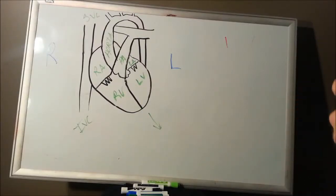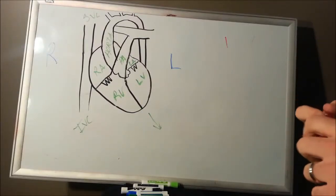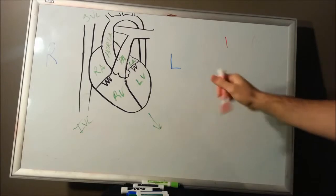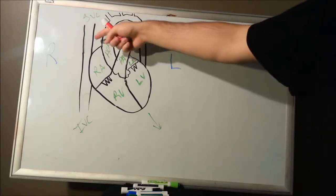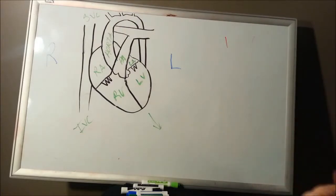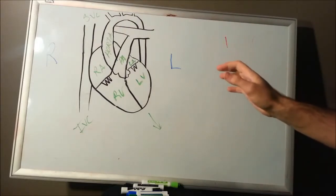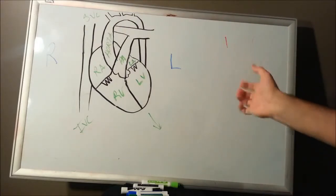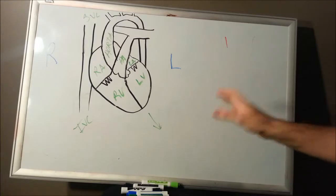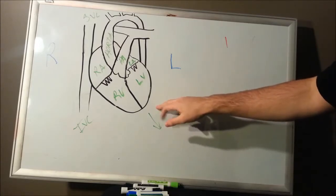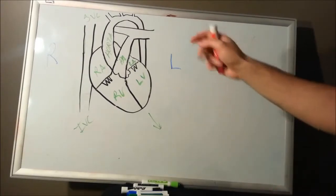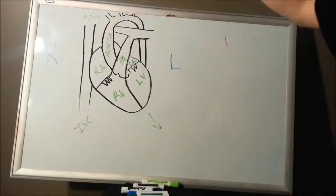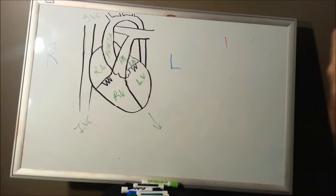Now we're going to cover the conduction system of the heart. Just to orient, this is going to be your apex of the heart, and up here is going to be your base of the heart. It's kind of flipped around what you might think, because the base — people typically think bottom — but your apex of the heart is going to be facing down towards your left hip, while your base of the heart is going to be more superiorly up, kind of located at the top of your lungs.